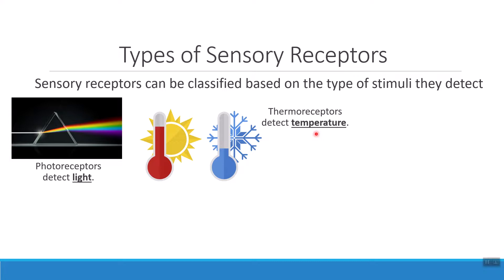Thermoreceptors help to detect temperature. There are many thermoreceptors in your skin to help you monitor your external environment, but we also have several thermoreceptors embedded in parts of our brain like the hypothalamus to monitor your internal temperature. So when you have a fever, like Dr. Aulis has recently had, your thermoreceptors in the brain would detect that the internal temperature is really high. When we go outside and it's cold, the thermoreceptors in your skin would detect that sensation as well.